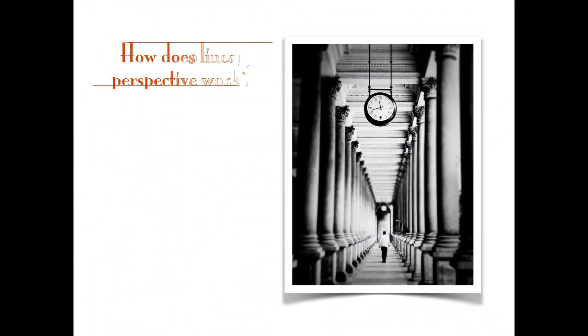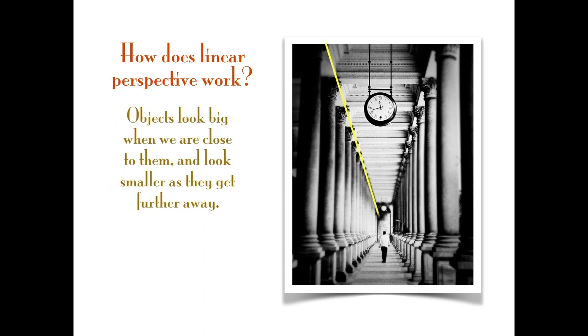The way that it works is because objects that we're close to look big and objects that are far away look small. If you were to line things up and connect ends and edges, they would meet at one point and form converging lines.